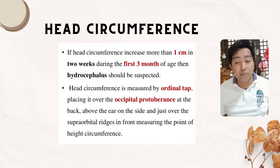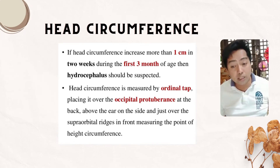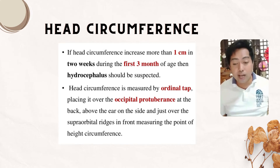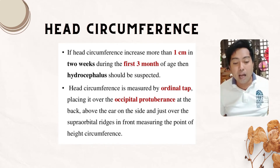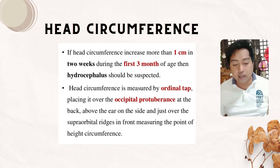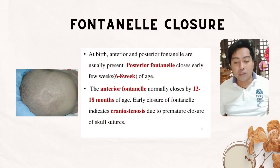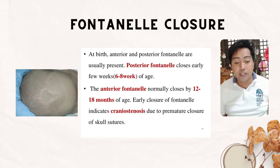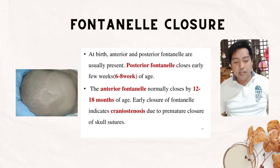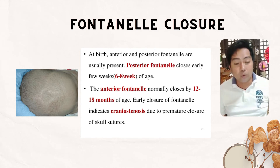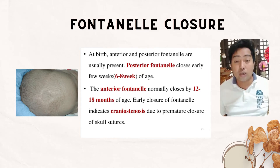If head circumference increases more than 1 cm in 2 weeks during the first 3 months of age, then hydrocephalus should be suspected. Head circumference is measured by placing tape over the occipital protuberance at the back, above the ears on the sides, and just over the supraorbital ridges in front. At birth, anterior and posterior fontanels are usually present. The posterior fontanel closes early at 6 to 8 weeks of age. The anterior fontanel normally closes by 12 to 18 months of age. Early closure indicates craniosynostosis due to premature closure of skull sutures.